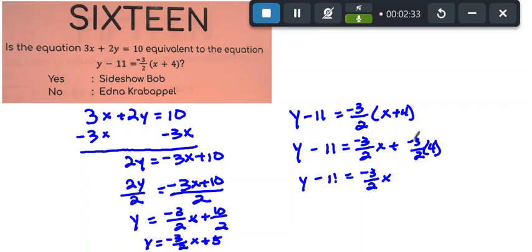Now, if I took 3, negative 3 halves is negative 1.5. So if I took negative 1.5 and multiplied by 4, I would get negative 6. So that's the same as plus negative 6.